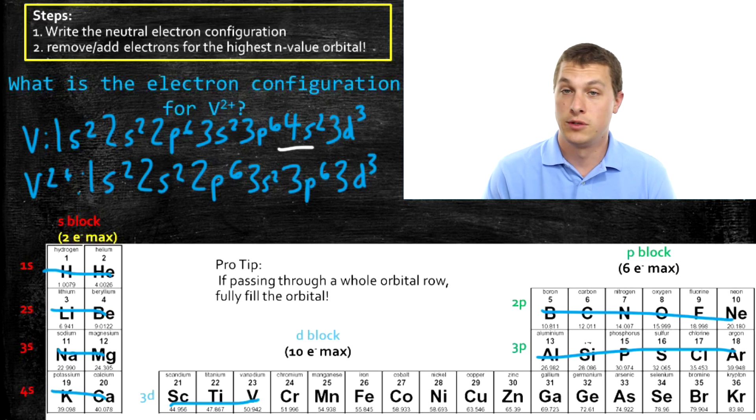When you remove the electrons, you take them from the outermost electrons. And recall that those 4S electrons would be the valence electrons. And that's why those go first.